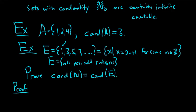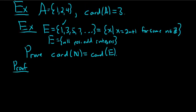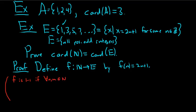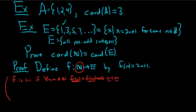To prove equal cardinality, we need a bijection between the two sets. Define f from the natural numbers to E by f(n) = 2n + 1. We need to show it's one-to-one and onto. Recall: f is one-to-one if for all n, m in the natural numbers, whenever f(n) = f(m), we have n = m — i.e., same outputs imply same inputs.